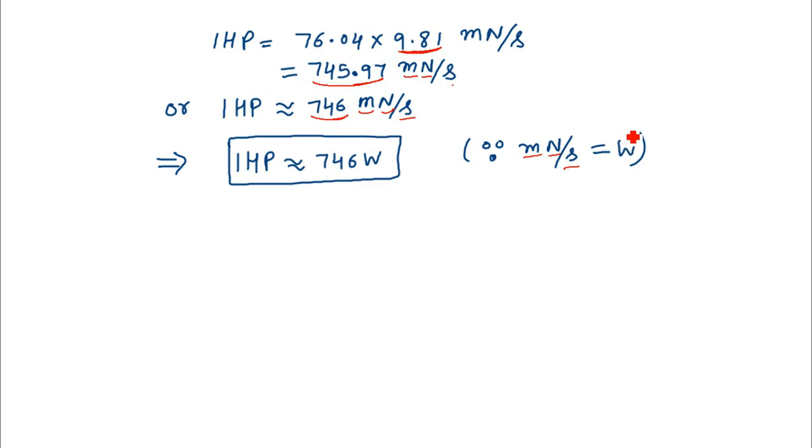So we can say that 1 horsepower equals 746 watts. Hence, we have proved this result.